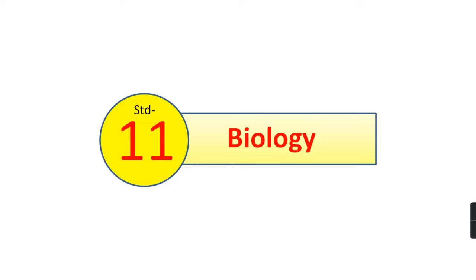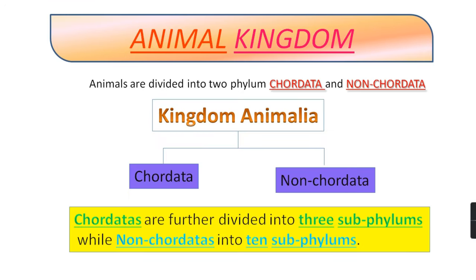Hello everyone! Today we are going to start a new chapter of 11th standard biology named Animal Kingdom. In this chapter we will study all about animals. Animals are divided into two phylums: Chordata and Non-Chordata. Chordata are the animals with notochord and Non-Chordata are the animals without notochord throughout their life. Chordatas are further divided into three sub-phylums while Non-Chordatas into ten sub-phylums.